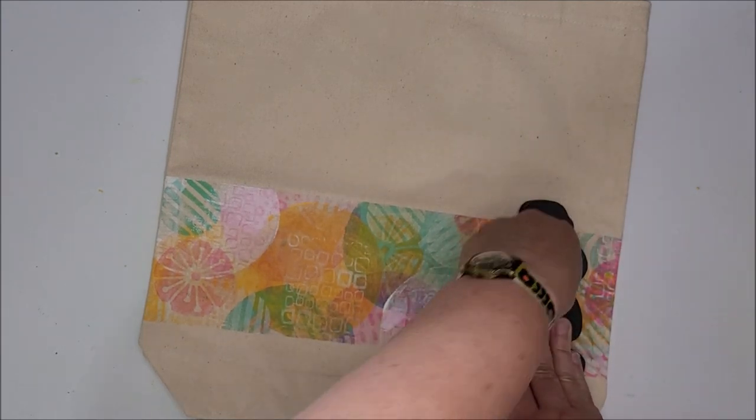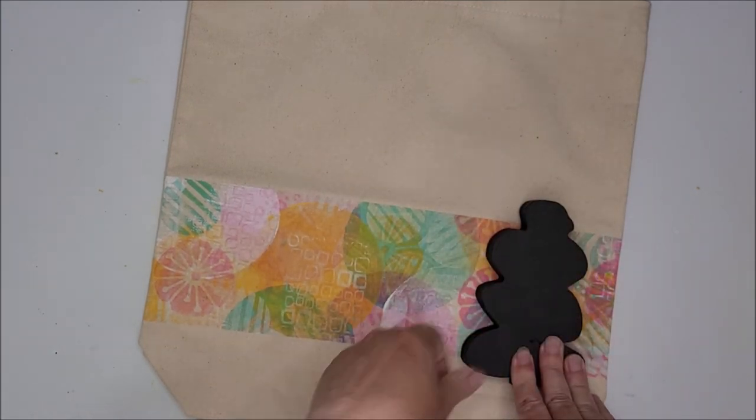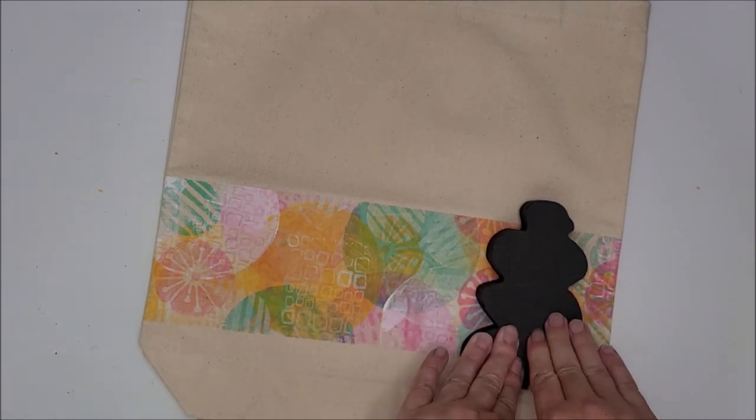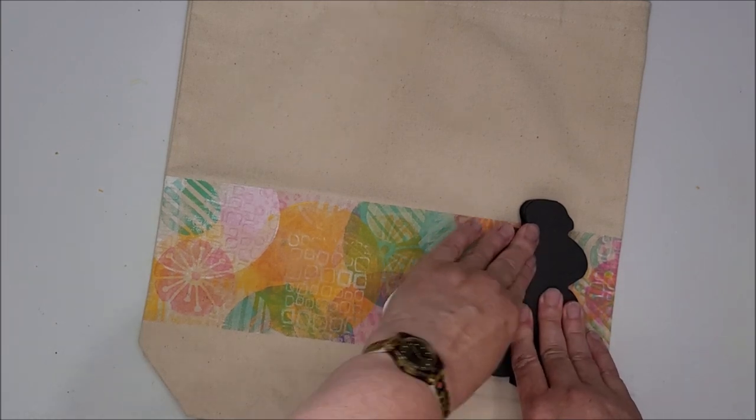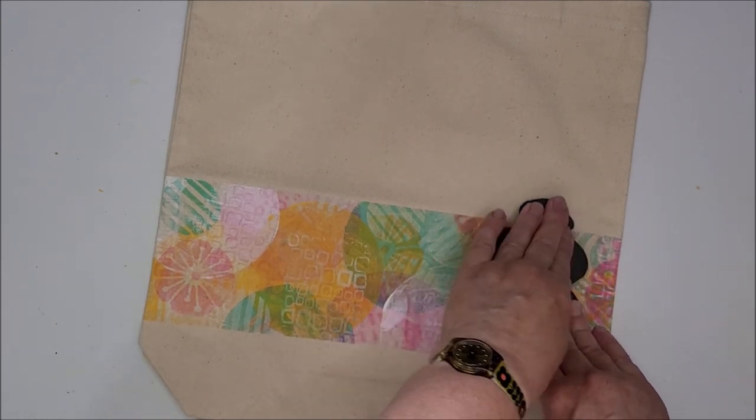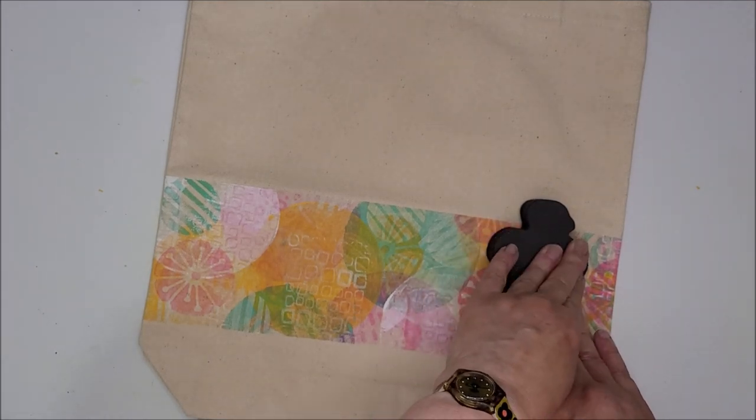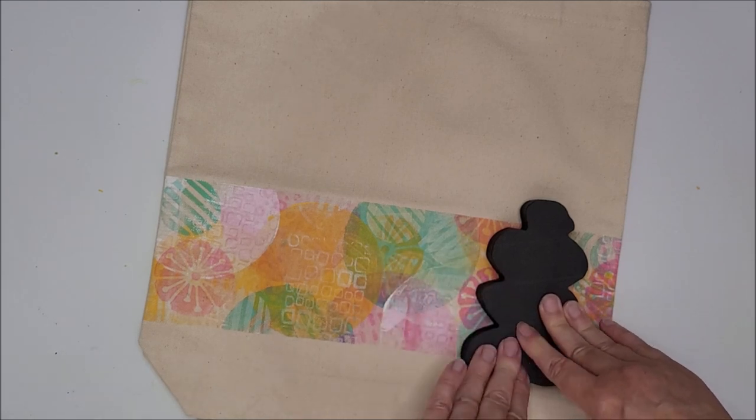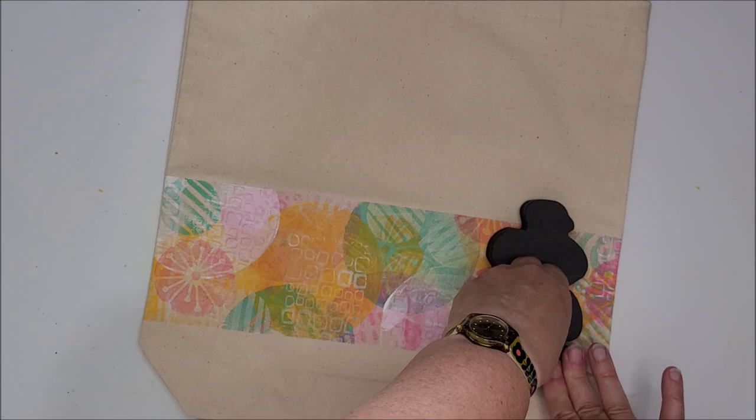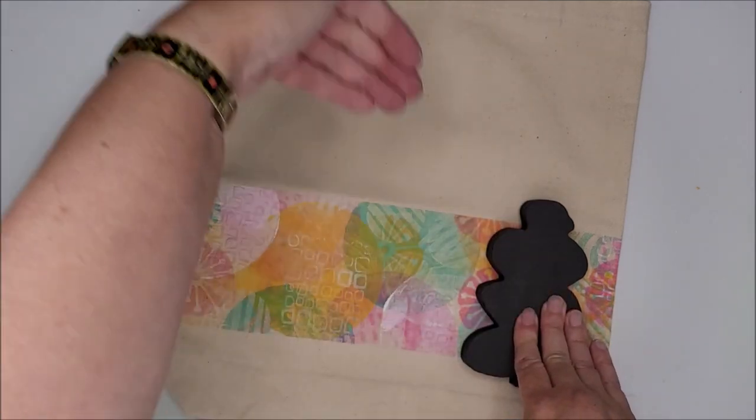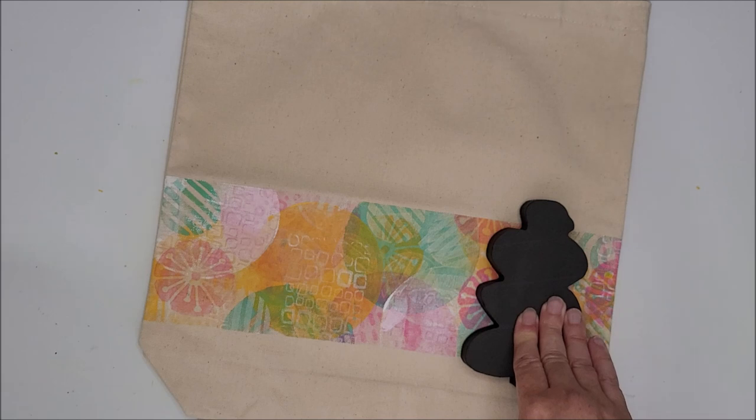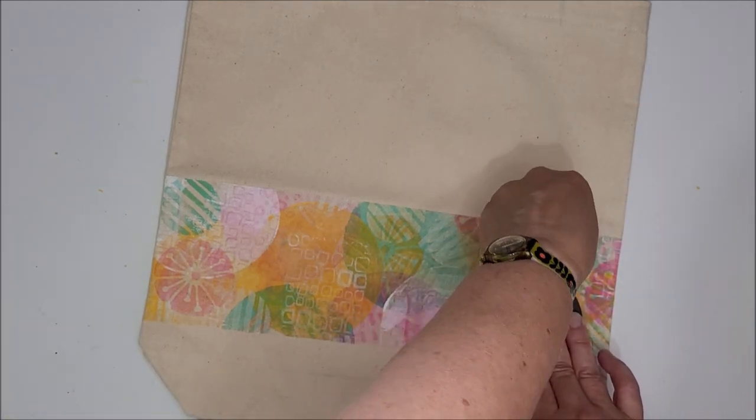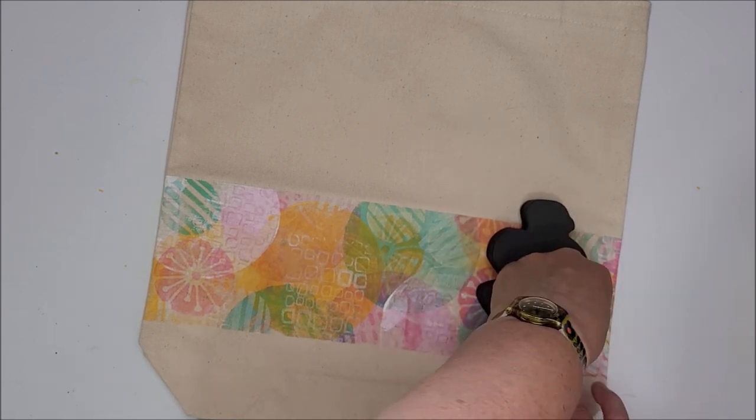And press down nice and firmly. I have let this border dry and always give it a quick blast with a heat tool if you want to speed up the drying process. But as with all gel printing projects, you're using quite thin layers of paint so they tend to dry pretty quickly. If the fabric that you're using is quite thin and lightweight, put a piece of card inside so that it doesn't seep through to the other side. This is quite a heavy canvas, so it should be absolutely fine.